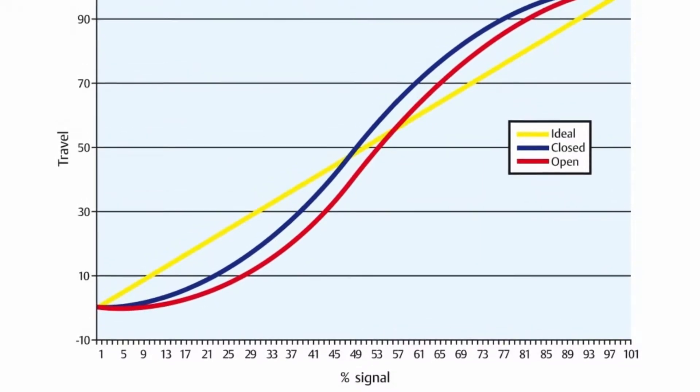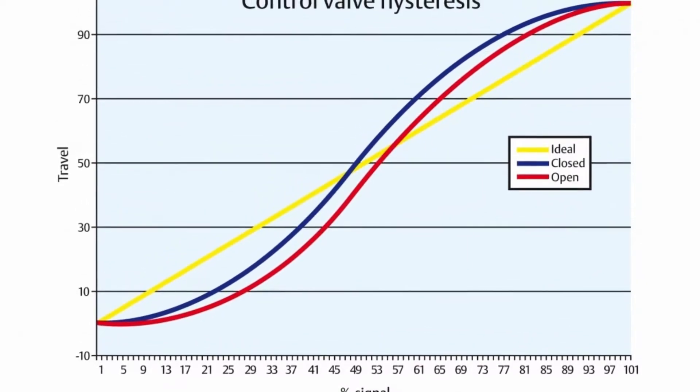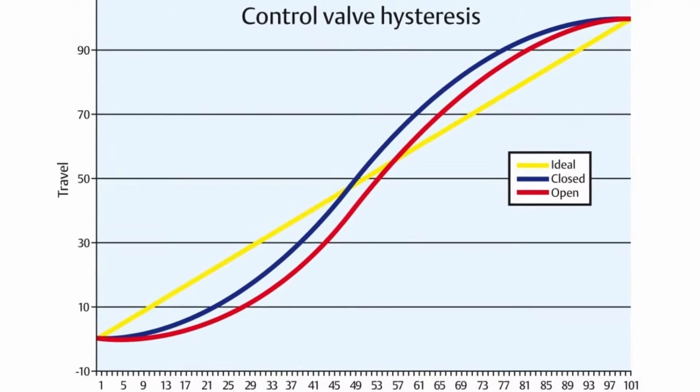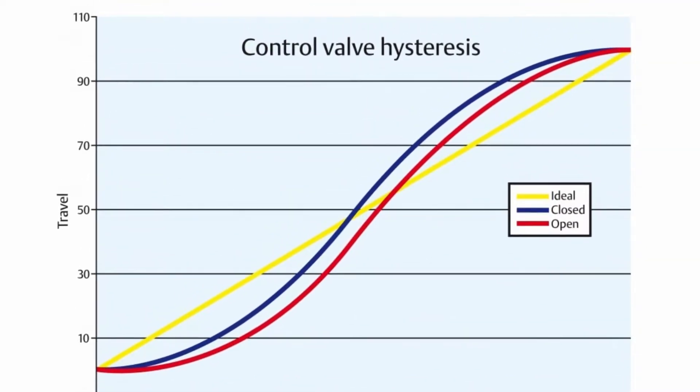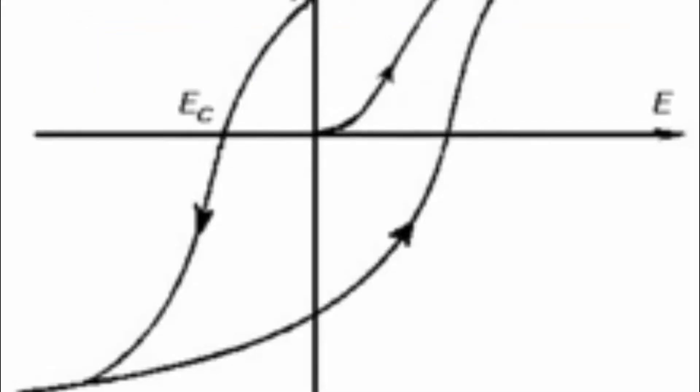Hysteresis is the dependence of the state of a system on its history. For example, a magnet may have more than one possible magnetic moment in a given magnetic field, depending on how the field changed in the past.